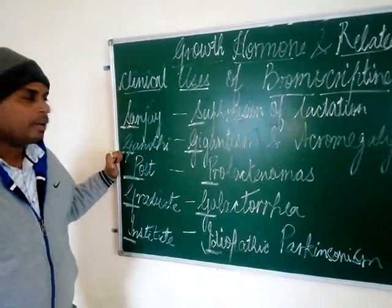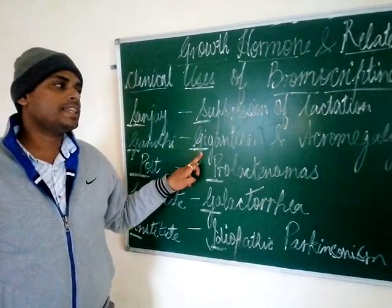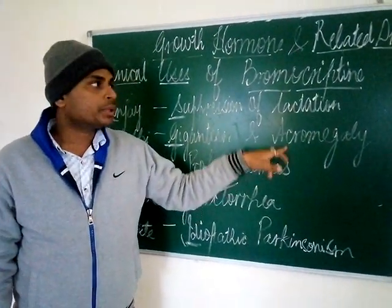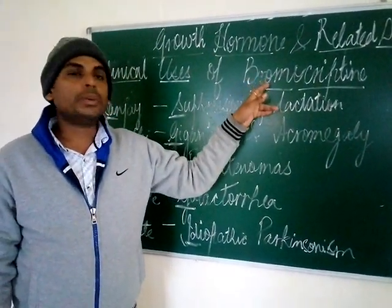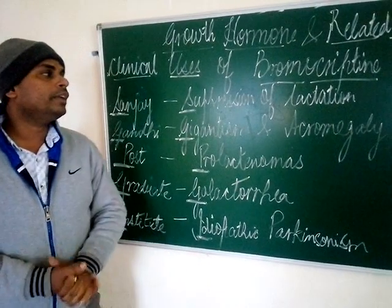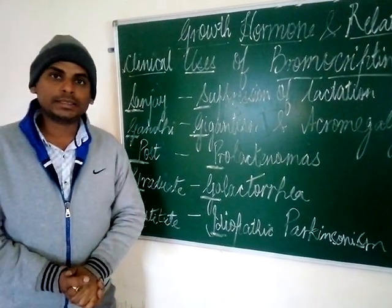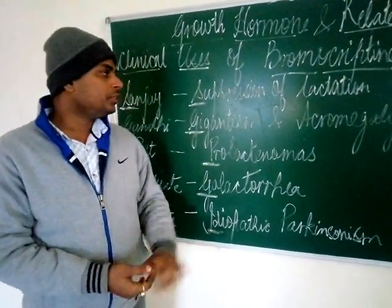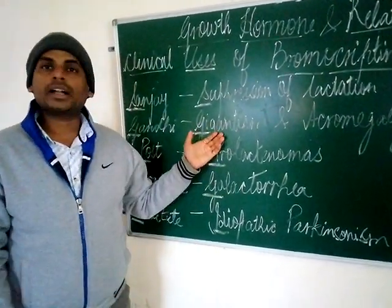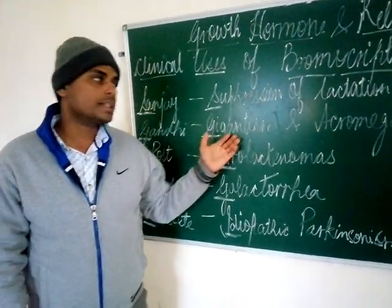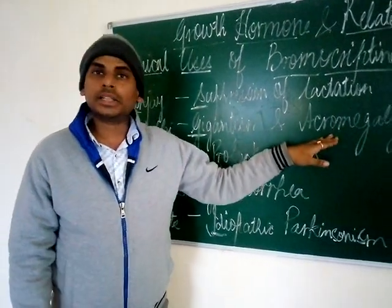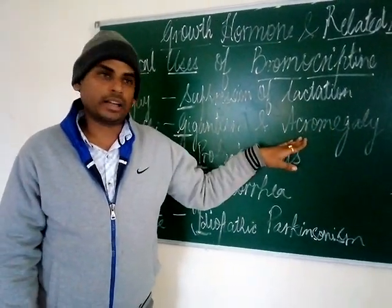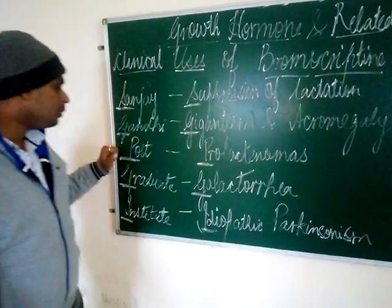The G of Gandhi refers to gigantism and acromegaly. Patients treated with bromocriptine can have gigantism, which occurs in younger patients, whereas once the growth of the patient is complete, acromegaly can occur.